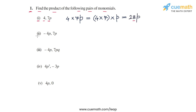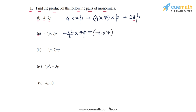In the second part, we have minus 4p into 7p. So we have to calculate minus 4p into 7p. Once again, we multiply the coefficients separately, so minus 4 into 7. And then we multiply the variable parts p and p.